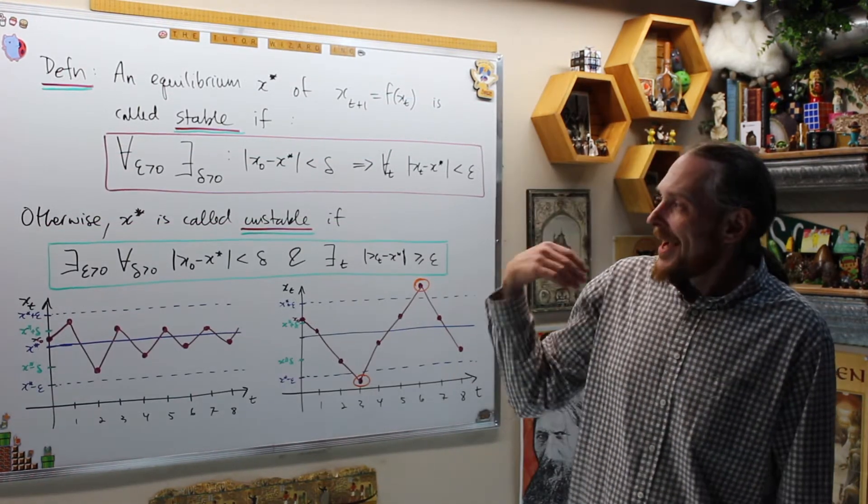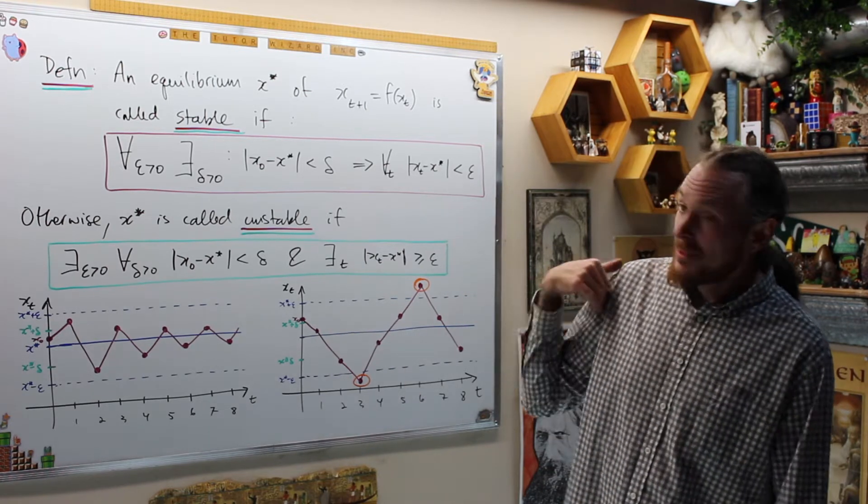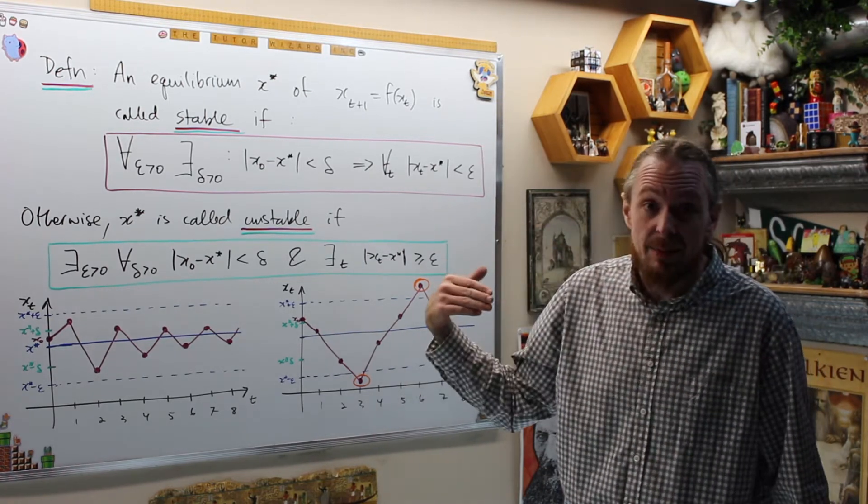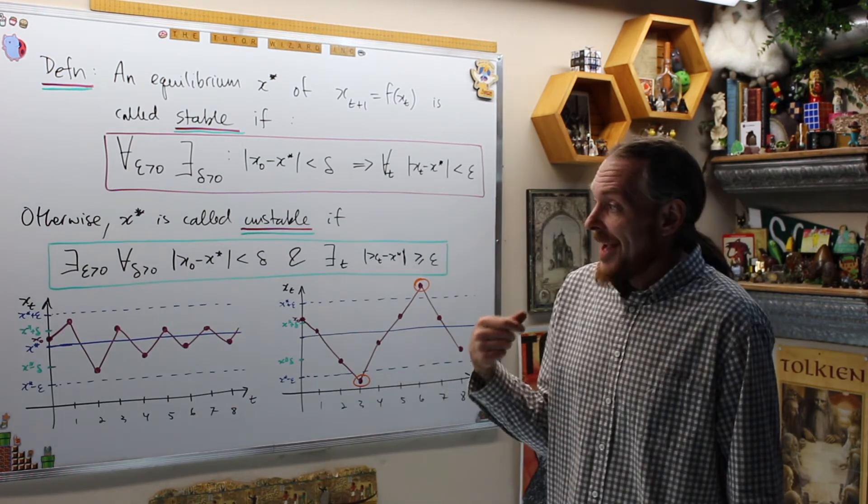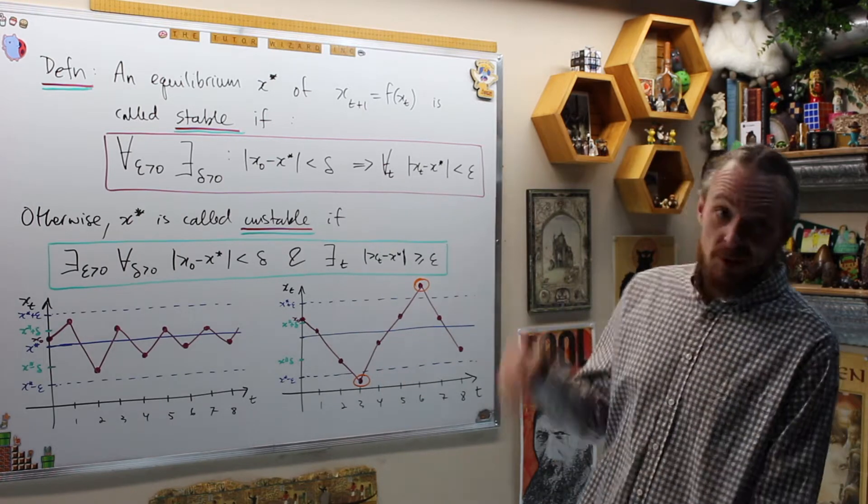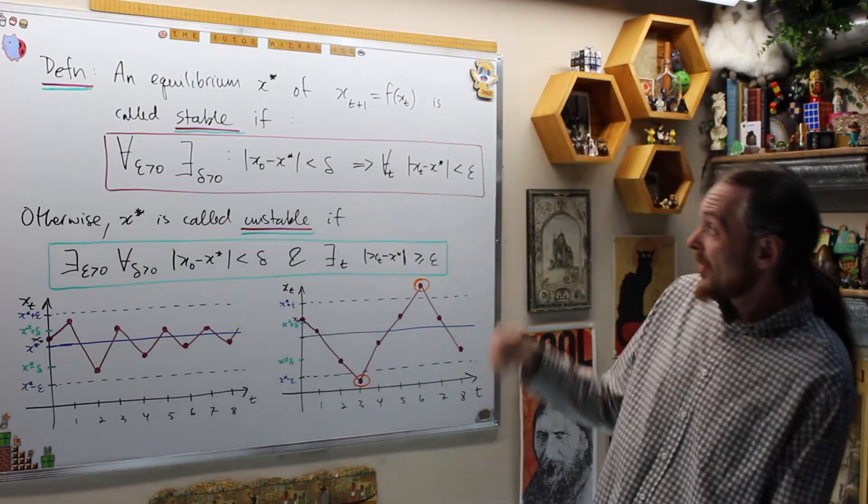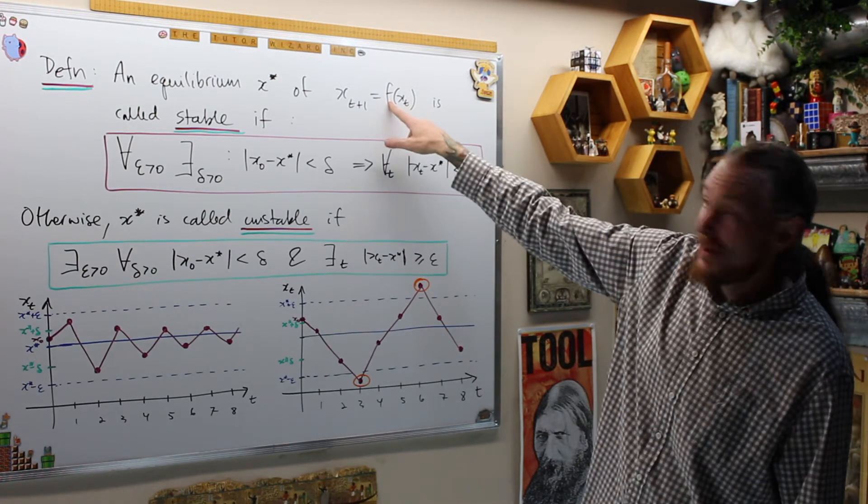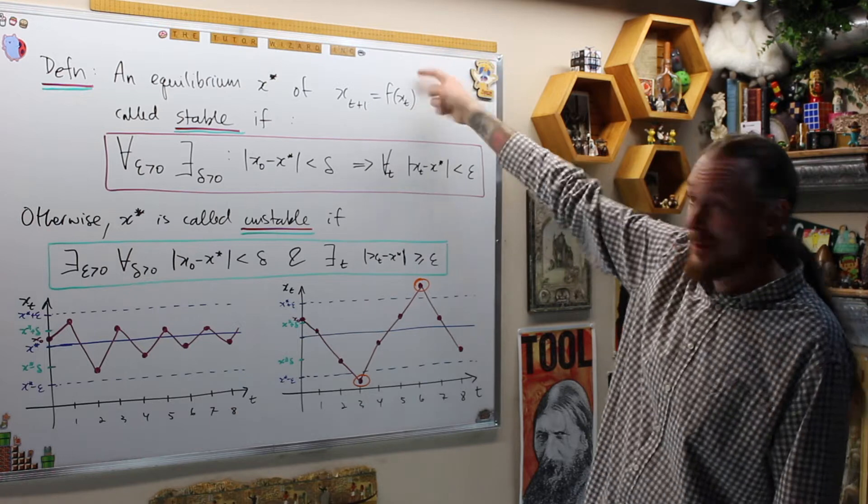Alright, so our first definition—I have three definitions. Basically, they're all related to each other, but the first one is going to be stable and unstable. Then we're going to get attracting, and then we're going to get asymptotically stable, which is both stable and attracting. So the first one is going to be an equilibrium x* of the difference equation x_{t+1} = f(x_t), regardless of whether this is linear or nonlinear now.